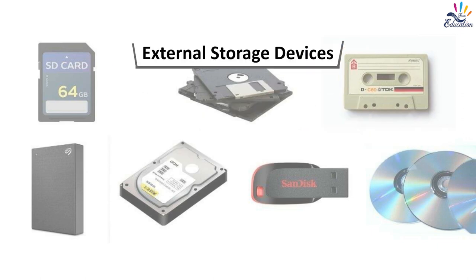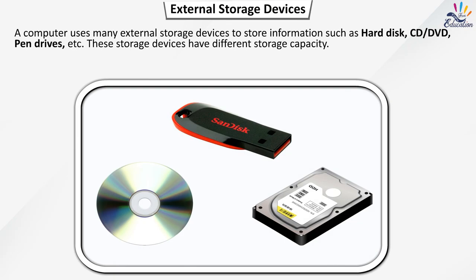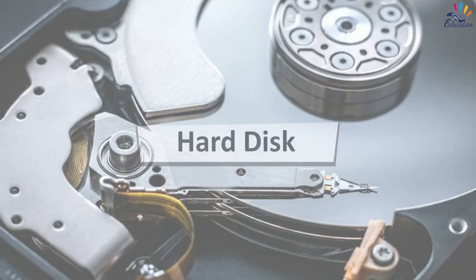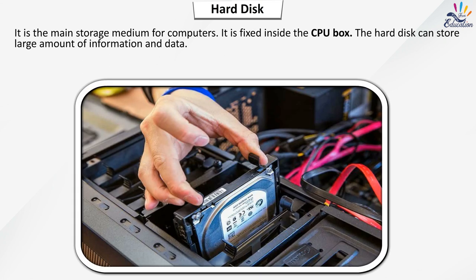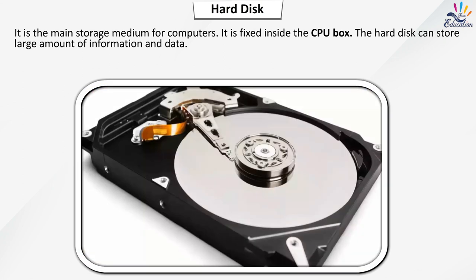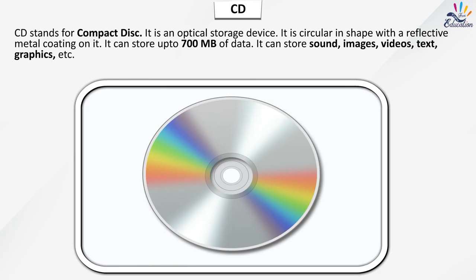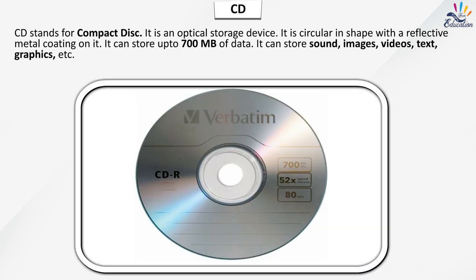A computer uses many external storage devices to store information such as hard disk, CD, DVD, pen drives, etc. These storage devices have different storage capacities. The hard disk is the main storage medium for computers. It is fixed inside the CPU box and can store large amounts of information. CD stands for compact disk. It is an optical storage device, circular in shape with a reflective metal coating. It can store up to 700 MB of data including sound, images, videos, text and graphics.